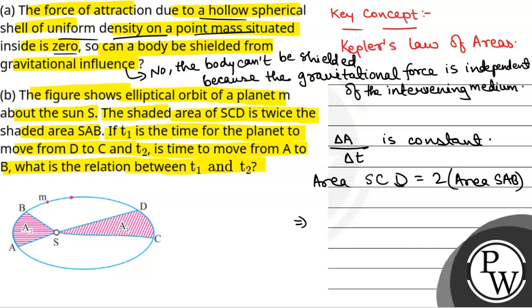So now we have the ratio of delta area SCD by delta area SAB. Kepler's law of areas says that will be equal to T1 by T2, and that will be equal to 2.